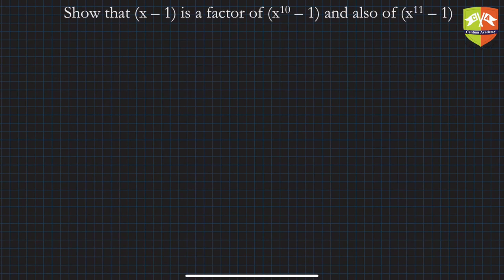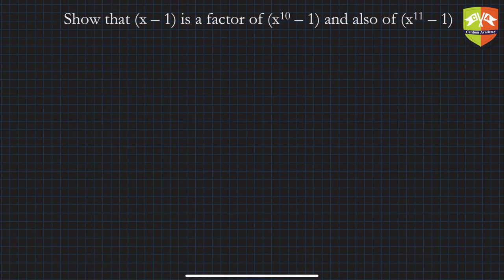In this question, it says show that (x - 1) is a factor of (x^10 - 1) and also of (x^11 - 1).